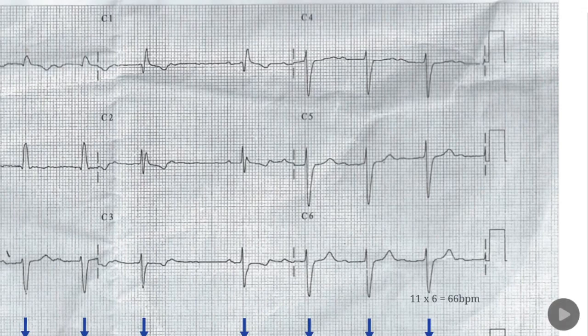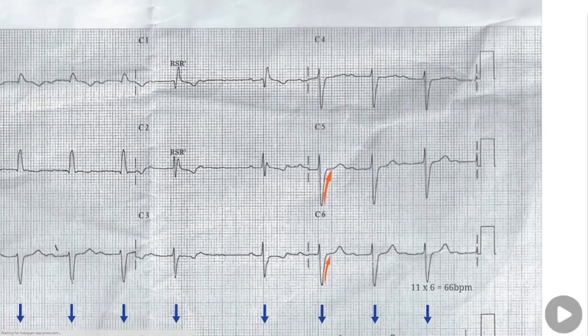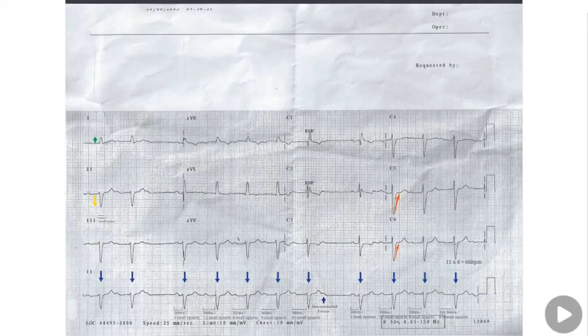In precordial leads, this ECG is showing abnormal QRS complex morphology with RSR pattern in V1 and V2, and slurred S wave pattern in V5 and V6, thus showing a right bundle branch block pattern.